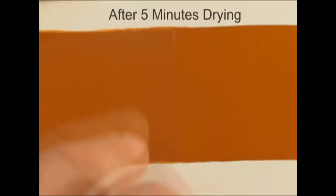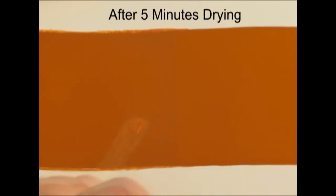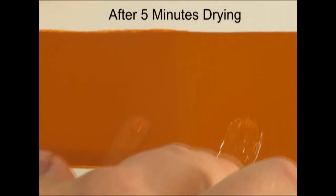Let's take a look at paint film thickness. This heavy body Mars Yellow is applied at two thicknesses onto a painted surface. After five minutes, we test the dryness level. The thinner section is nearly dry, yet the thicker area remains quite workable.